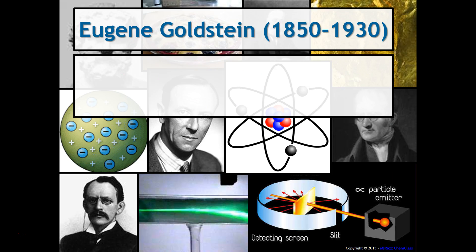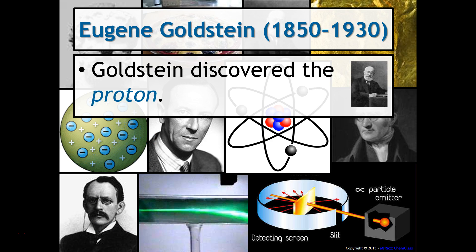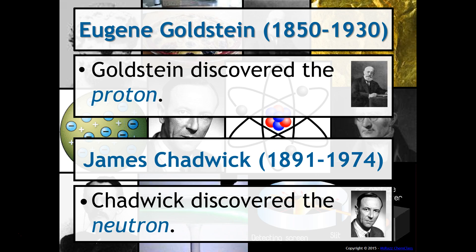We're not going to go into the experiments that led to the discovery of the proton, but Goldstein is typically credited with the discovery of the proton. At times, I have seen people also crediting Rutherford, but for our purposes, we'll say Goldstein is credited with that. And then finally, James Chadwick is responsible for discovering the neutron.